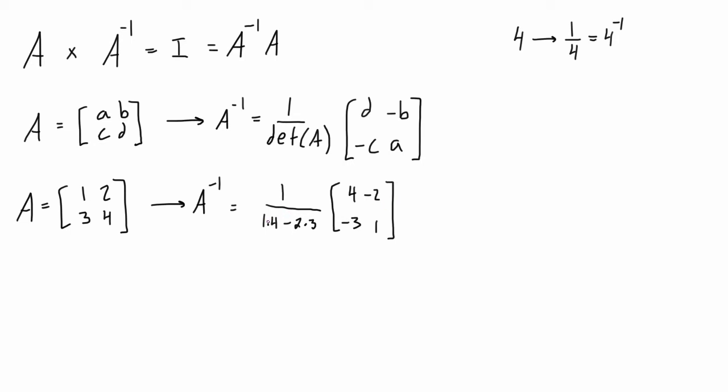All right, so if we just simplify this, we have 1 times 4 is 4 minus 2 times 3, so 4 minus 6, we are going to get this is just going to reduce to 1 over negative 2 times the stuff that's in this matrix, so we have 4, minus 2, minus 3, and 1.